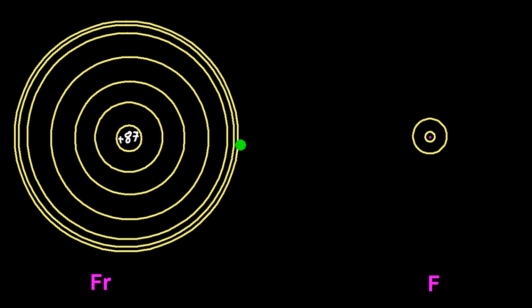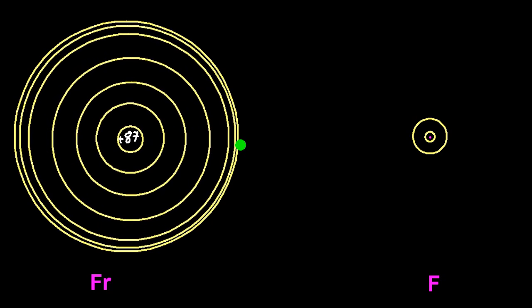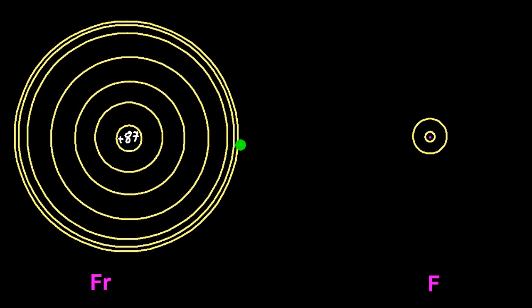Francium is the biggest atom on the periodic table and it has the most shielding and also the electron is furthest from the pull of the nucleus than any other atom. So francium just can't really retain or even attract electrons.